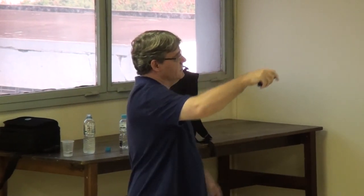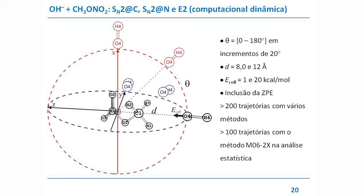Partindo de uma certa posição, colocamos a molécula na sua geometria de equilíbrio — o nosso substrato orgânico é o metil nitrato — e fizemos uma varredura sistemática da hidroxila colidindo em várias regiões. Algumas coisas precisamos controlar a priori: essa distância inicial, a energia de colisão, como vamos partir as trajetórias. Realizamos mais de 200 trajetórias com vários métodos, e mais de 100 trajetórias foram usadas para análise estatística.